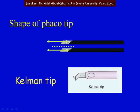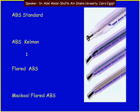We can also change the shape of the tip by using a Kelman tip. With the standard tip, the effect is only opposite the metal part, but if you bend this metal part, you get a wider surface area to achieve the phaco effect.